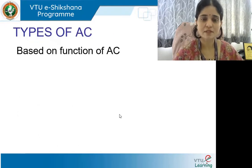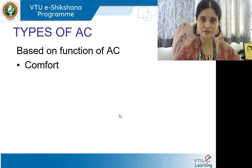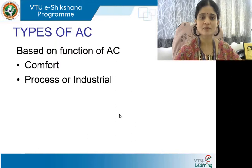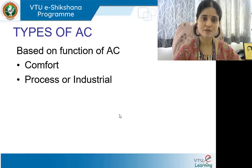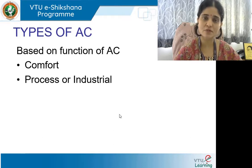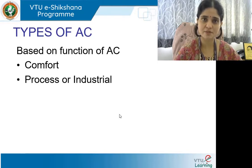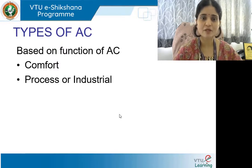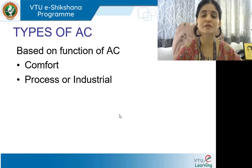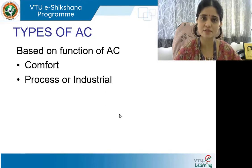Types of AC based on function: we have two categories — comfort AC and process or industrial AC. Comfort AC's main objective is to create indoor environments that are conducive and comfortable to people in terms of regulated temperature, humidity, air velocity, and cleanliness. Process or industrial AC aims at providing ambient indoor climates for conducting processes of various degrees — manufacturing, testing, laboratories, etc.